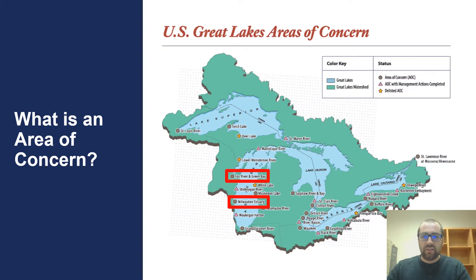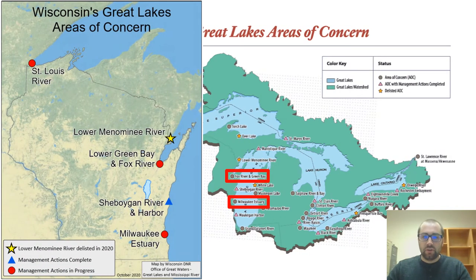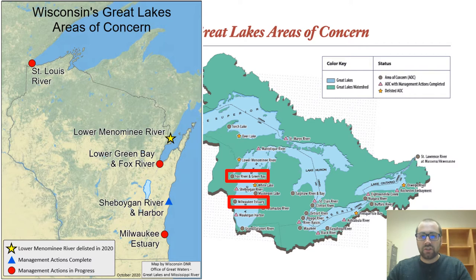Wisconsin has five Areas of Concern from north to south: the St. Louis River in the Lake Superior Basin, and in the Lake Michigan Basin, the Lower Menominee River, Lower Fox River Green Bay, Sheboygan River, Milwaukee, and the Milwaukee Estuary. In 2020, the Lower Menominee River was the first Wisconsin Area of Concern removed from this list of degraded shoreline communities. Today we're going to scratch the surface on some of the important work happening in the Lower Fox River Green Bay and Milwaukee Estuary Areas of Concern.